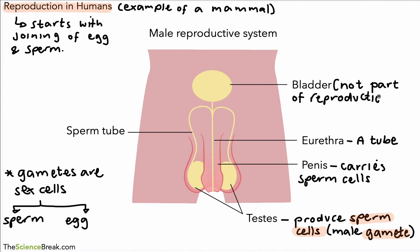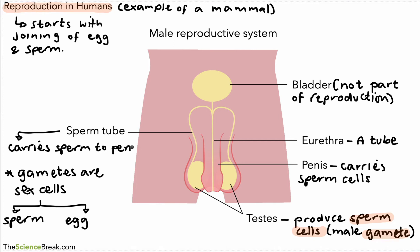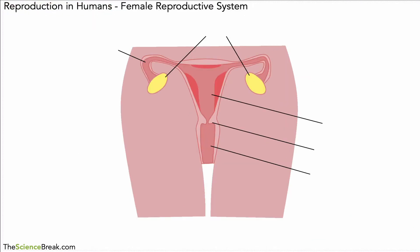Finally, the sperm tube has the role of carrying sperm cells from the testes to the urethra, which is in the penis. So the sperm tube carries sperm cells from the testes to the penis via the sperm tube and along into the urethra. That's the male reproductive system.